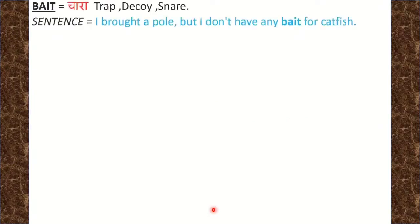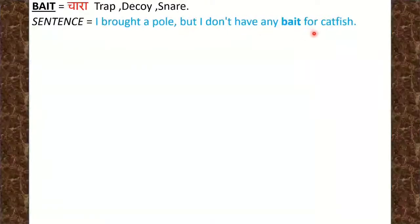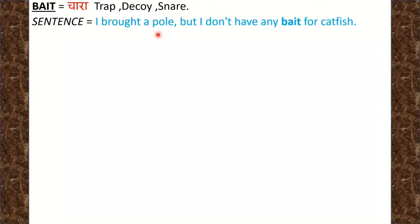Next word is Bait. Bait means चारा — trap, decoy, snare. Sentence: I bought a pole but I don't have any bait for catfish. मैंने मछली पकड़ने का pole तो खरीद लिया, पर मेरे पास catfish को पकड़ने के लिए चारा नहीं था.